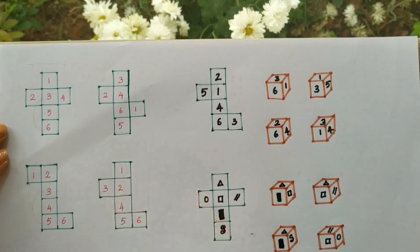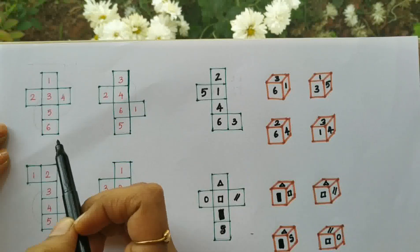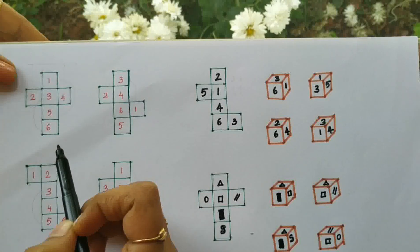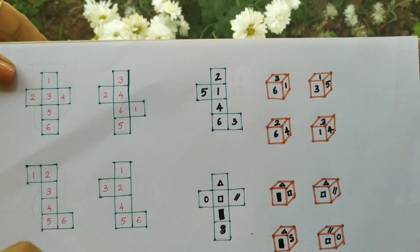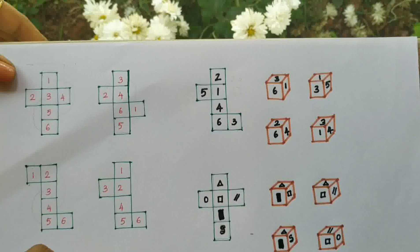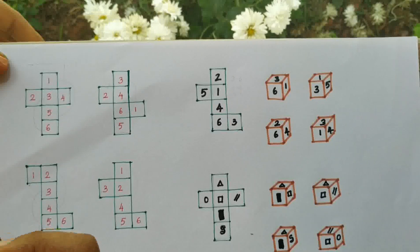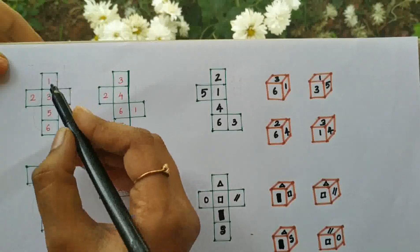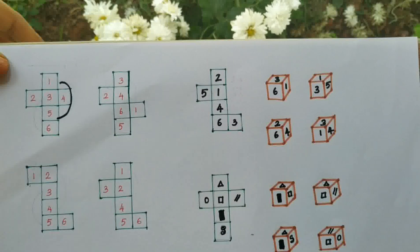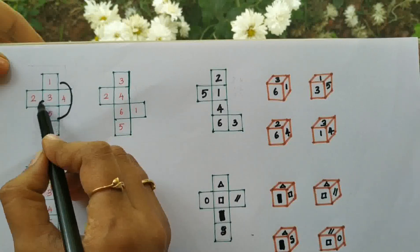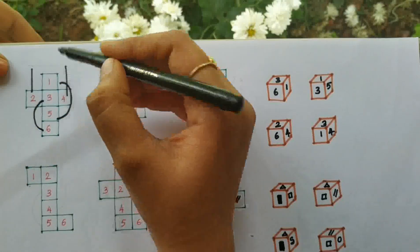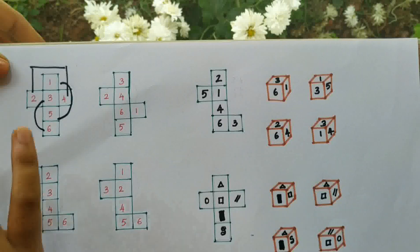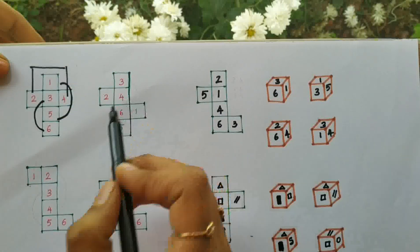There are three or four types of cube patterns. In the first pattern type, remember we have only one opposite side for any face and four adjacent sides. So here, the opposite side of one is five, and the opposite side of three is six. Two adjacent sides become opposite to each other in this pattern.